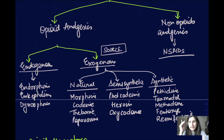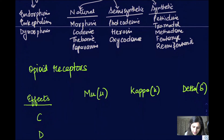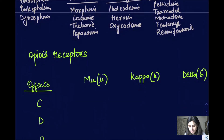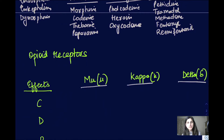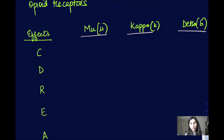Any drug produces its effect by action on receptors. The opioid receptors are classified into three major types: mu, kappa, and delta. These receptors are present mainly in the central nervous system. Mu, kappa, and delta — these are very important receptors for opioids.